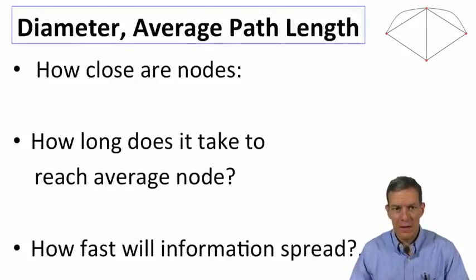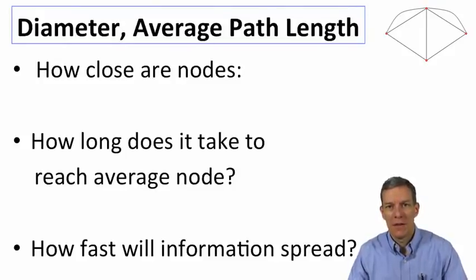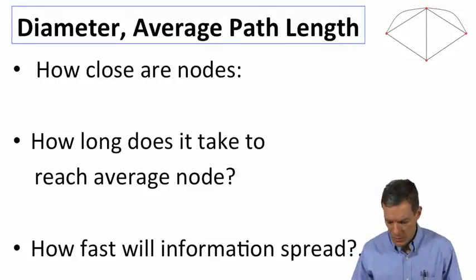Diameter and average path length refer to how close nodes are to each other. So how long will it take to get from one node to another? How fast will information spread? How quickly can we get from one part of a graph to another? These are questions that are going to be answered by things like diameter and average path length.